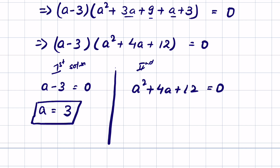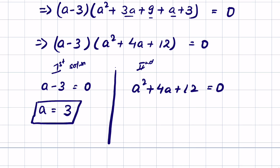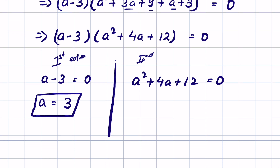Now let us check whether a real solution is possible, because this is a quadratic equation. We can check if a real solution is possible through the discriminant method — we find whether b square minus 4ac is greater than or equal to 0. If it is less than 0, then there is no real solution.